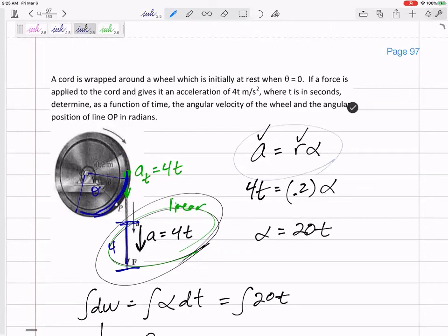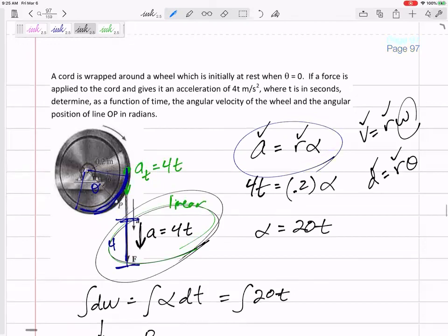We used A equals R alpha, but if they had given us the velocity, we could have used V equals R omega. If they had given us a velocity, we could have found omega. If they had given us the distance or the S, if they had given us a distance, we could find the theta.